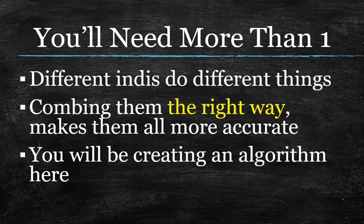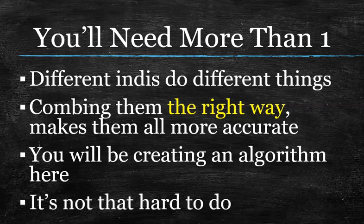And I say algorithm and that scares people — it's not that hard to do. An algorithm, really by definition, is just a system of rules that all have to say yes to one thing. And if they do, you go. If one of them says no, you don't go. That's it. That's all we're doing here. But just don't ever think that this whole process is going to be the search for the one holy grail indicator, because that does not exist. It's all about putting the best system together possible. And this entire channel shows you exactly how to do this.